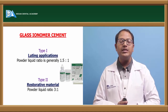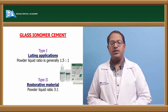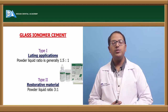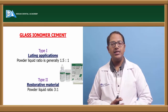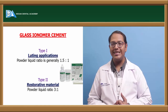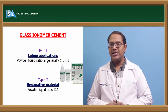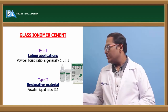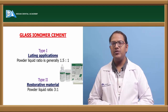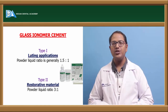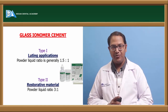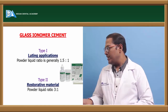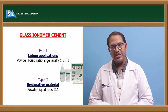Glass ionomer cement, also known as polyalkanoic acid cement, is a very important luting agent — largely because of its fluoride content. It is classified into multiple types: Type 1 is for luting, Type 2 is restorative, and Type 3 is liners and bases. Powder-liquid ratios: luting is 1.5:1, restorative is 3:1, liners/bases also follow specific ratios.